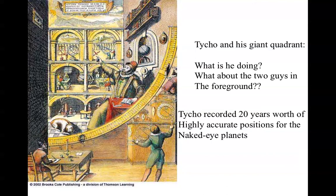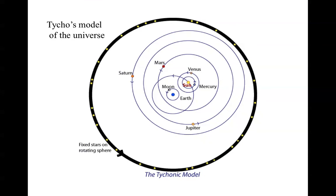Tycho recorded 20 years of highly accurate positions for the naked-eye planets — a far better collection of data than had ever existed before. Unfortunately, Tycho was not able to make a clean break from the Ptolemaic model and came up with a kind of hybrid between the Copernican and Ptolemaic models, in which the Sun orbited the Earth but the other planets orbited the Sun. This idea quickly faded, but it was a little historical sidelight from this great observer. In our next segment, we'll see how these data were used to really solve the problem of the solar system model once and for all.